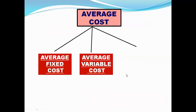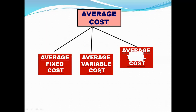There are three types of average cost. First is average fixed cost, second is average variable cost, and third is average total cost. In some books it is written as average cost and in some books it is written as average total cost.